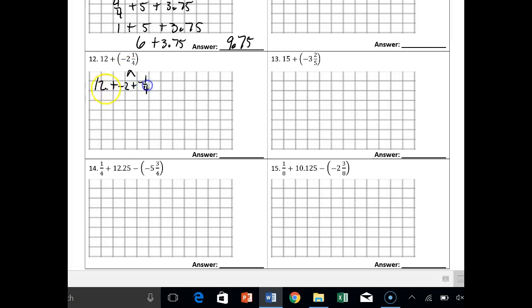So 12 plus, split this up, negative 2 plus negative 1 fourth. And this is a DSSM problem right here, so that becomes positive 10 because we had more positives. So 12 minus 2 is 10 plus negative 1 fourth.